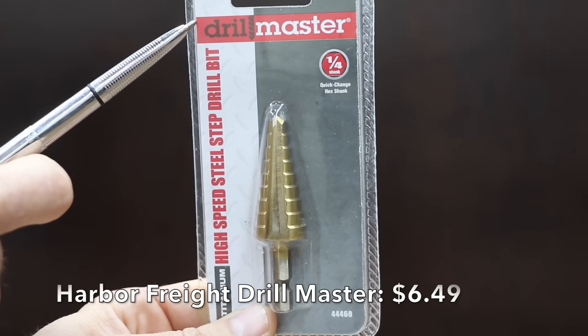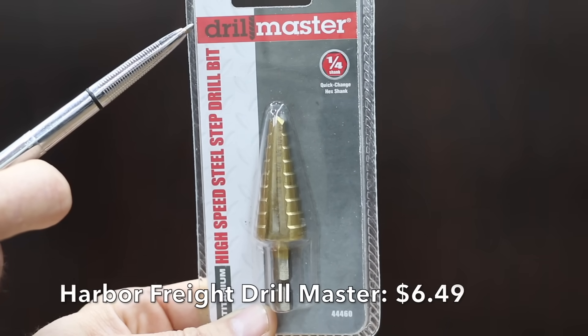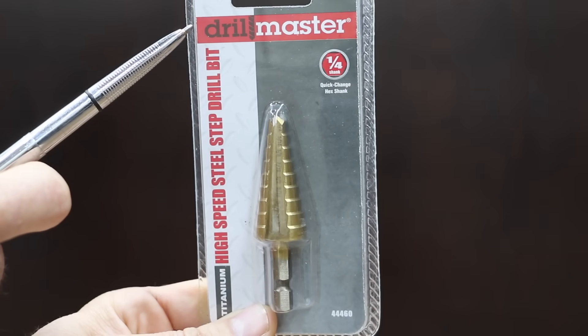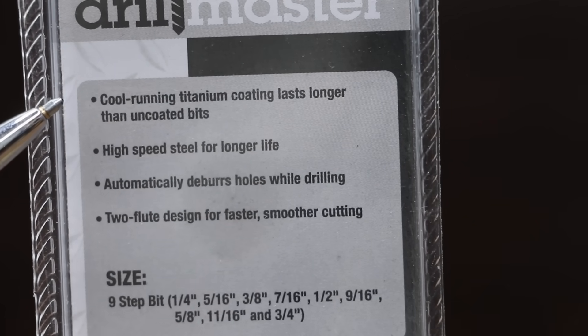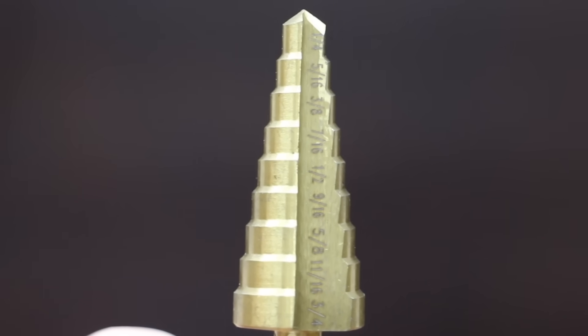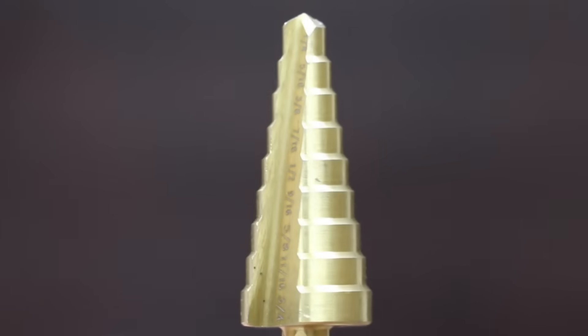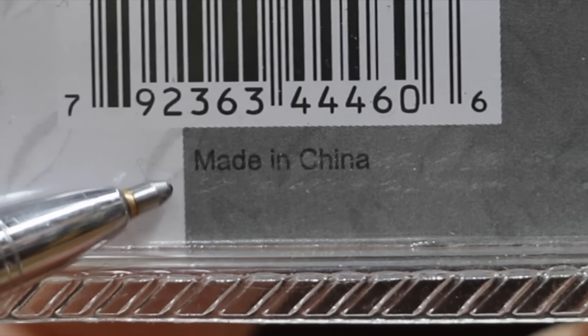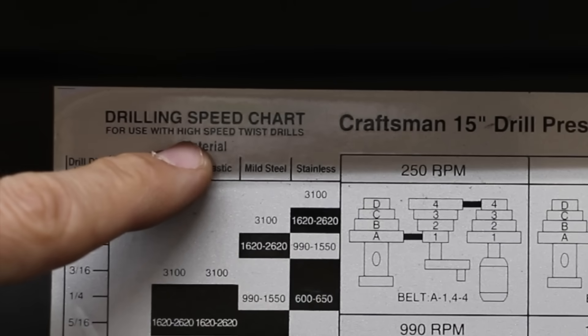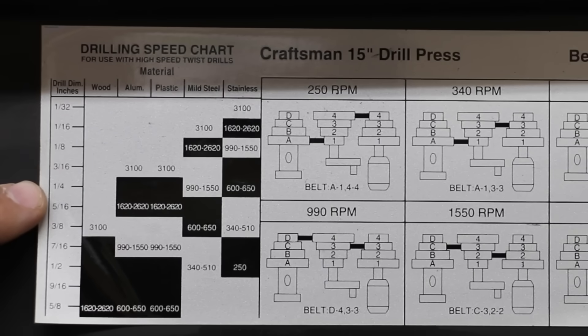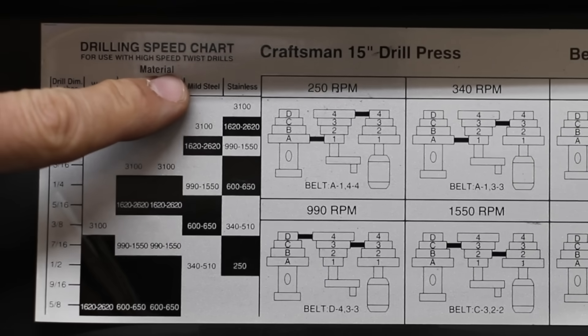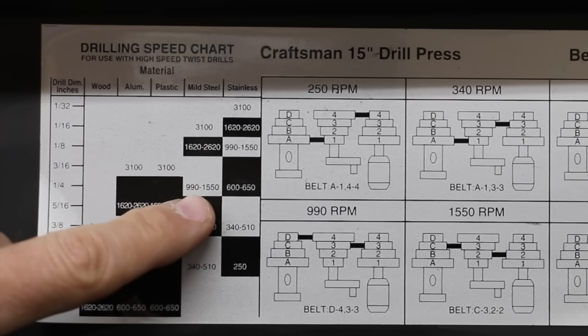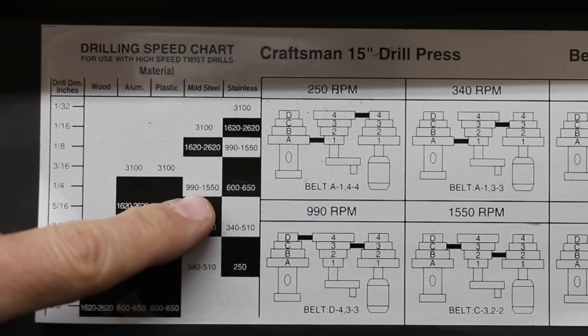The least expensive step bit we'll be testing at only $6.49 is the Harbor Freight Drill Master. They claim their cool running titanium coating lasts longer than uncoated bits, high-speed steel for longer life, automatically deburrs holes while drilling, two-flute design for faster, smoother cutting. Made in China. Fortunately, this drill press has a drilling speed chart. All of our step drills are either three-sixteenths or one-quarter, so we're going to set this up for mild steel, which is our first test sample, and we're going to set this at 990 RPM.